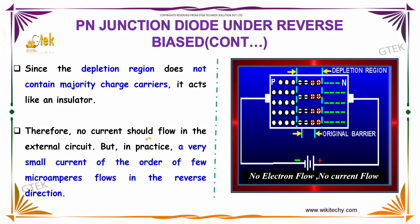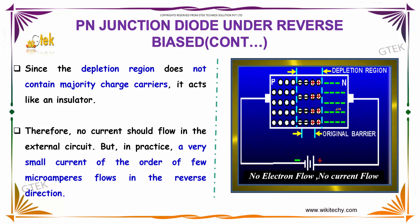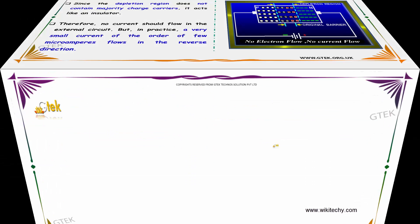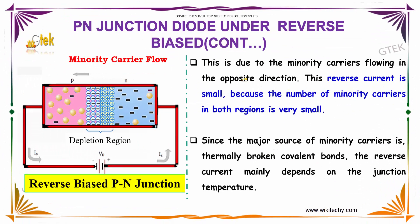Therefore, no current should flow in the external circuit, but in practice a very small current of the order of a few micro amperes flows in the reverse bias. This is due to the minority carriers flowing in the opposite direction. This reverse current is small because the number of minority carriers in both regions is very small. Since the major source of minority carriers is thermally broken covalent bonds, the reverse current mainly depends on the junction temperature.